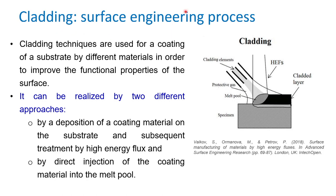Cladding is another surface engineering process. In cladding techniques we apply a deposition material, but the thickness of that cladded material is significantly higher in comparison with the surface alloying process. This cladding technique is used for coating a substrate with different materials, and the objective is to improve the surface properties. Cladding can be realized by two different approaches. The first approach is deposition of coating material on the substrate followed by treatment with a high energy flux.